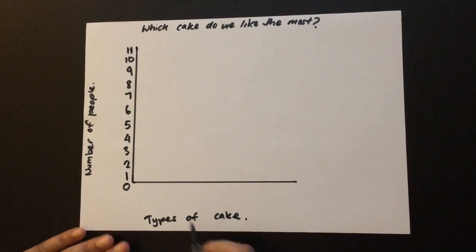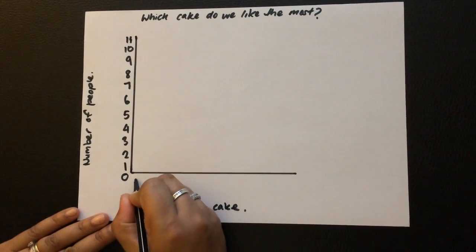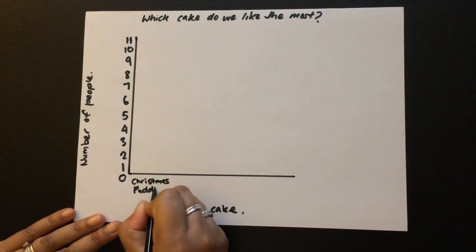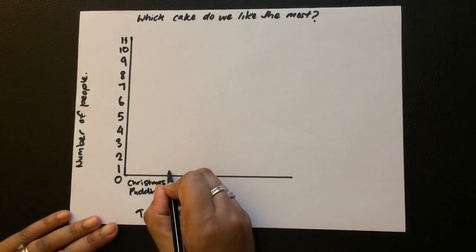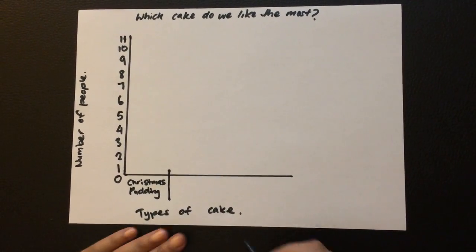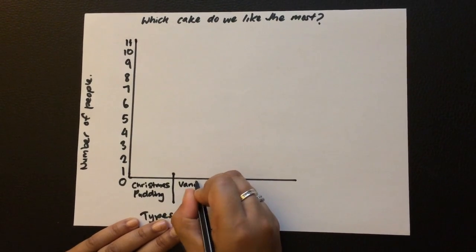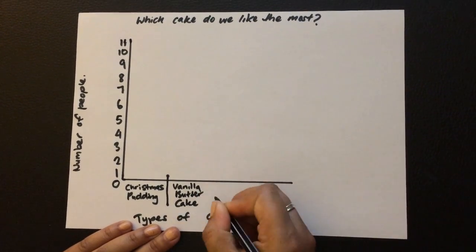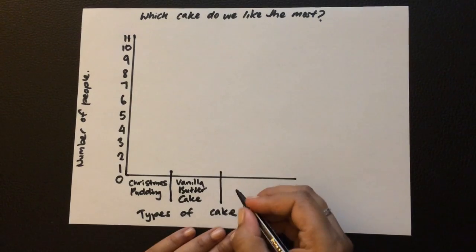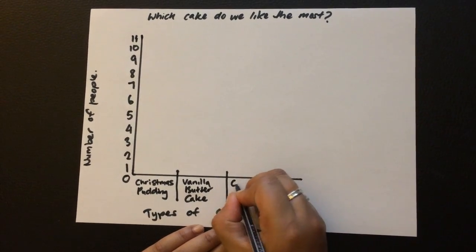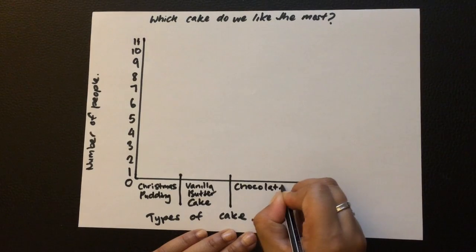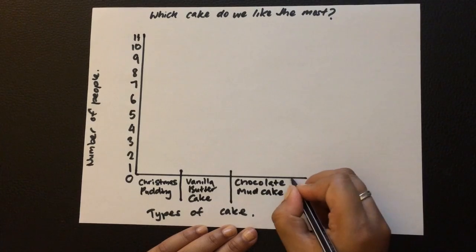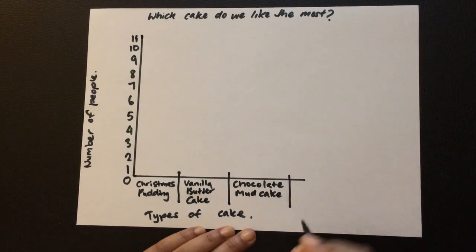Now the types of cake we have. First is Christmas pudding, so in nice neat writing, Christmas pudding, and we put a line like that. Next cake is vanilla butter cake and another line through there, and chocolate mud cake. You can use your ruler if you need to.